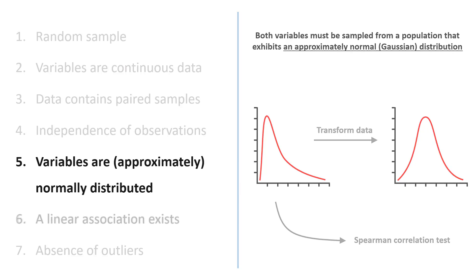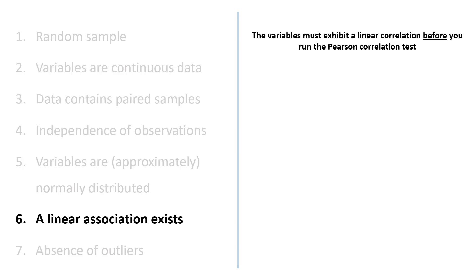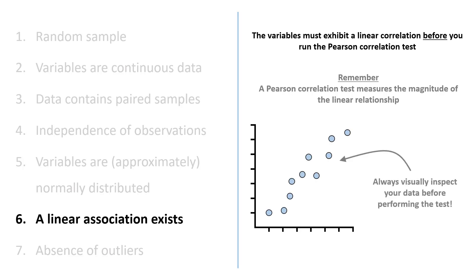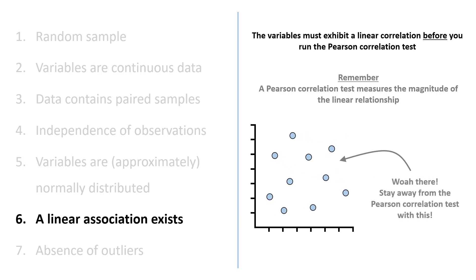The next assumption is that a linear association exists between the variables. This assumption is often overlooked when performing a Pearson correlation test — that is, the two variables must exhibit a linear correlation before you actually run the test. Remember, the aim of the Pearson correlation test is to measure the magnitude of the linear correlation between two variables. The best and most simple way to test this is to plot the two variables on a scatterplot and visually inspect it. If no linear association exists, then do not perform a Pearson correlation test — pure and simple.